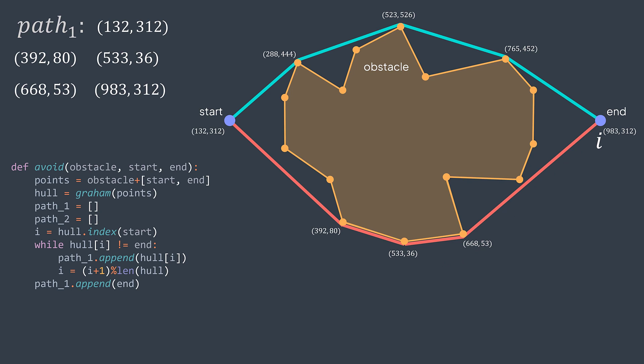To move to the next point, we increment I, but we set it modulo the length of the hull to go back to the beginning when we reach the last point.